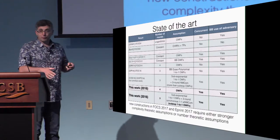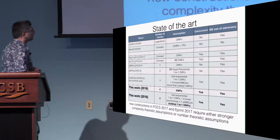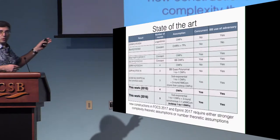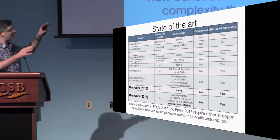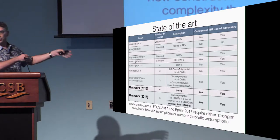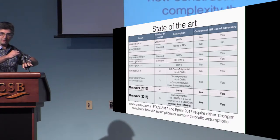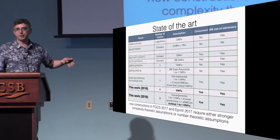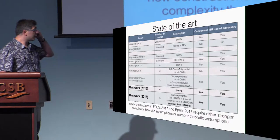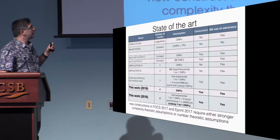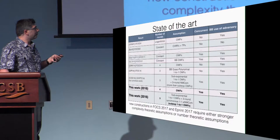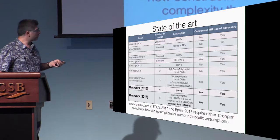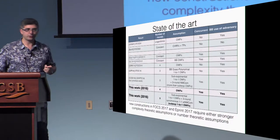There is follow-up work this year — new work — that doesn't improve our work overall. It improves some dimensions but not others. In particular, the new papers appearing in ePrint have stronger complexity assumptions or are based on number-theoretic assumptions.